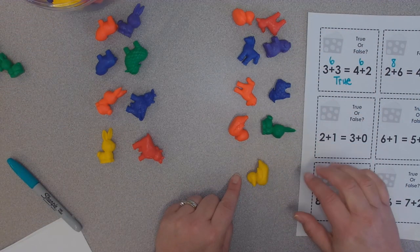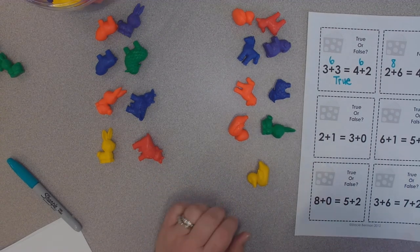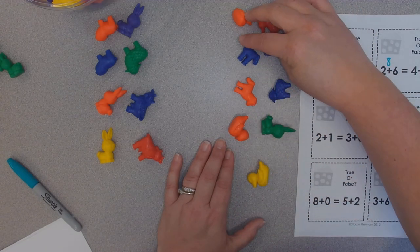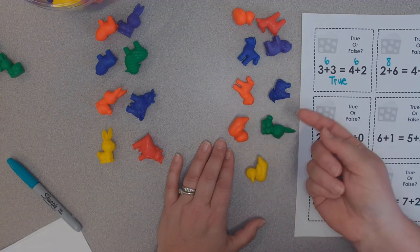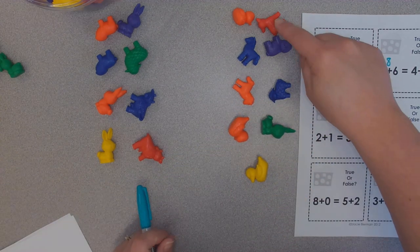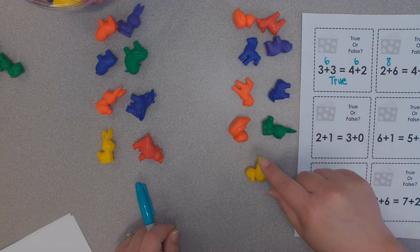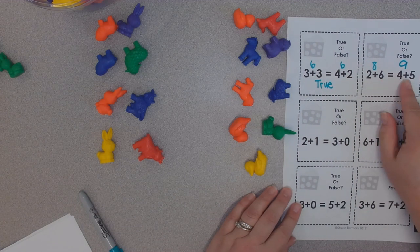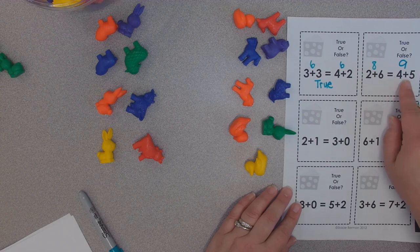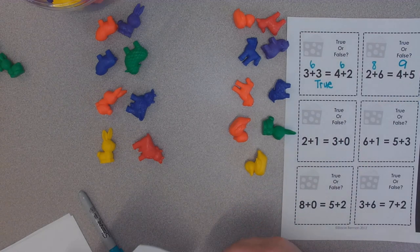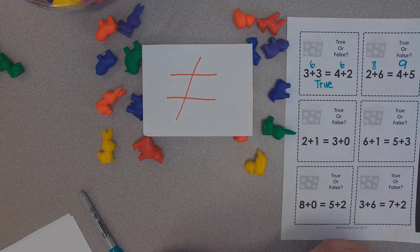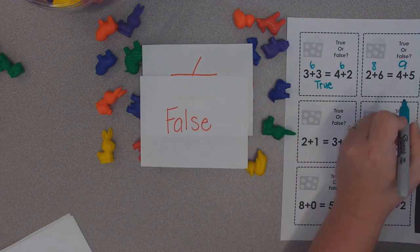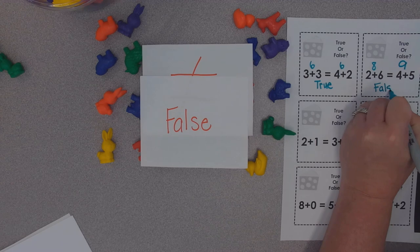It is not equal but let's see how many there are on this side just so we know. Now I know that 5 and 5 makes 10 but I have 4 and 5. So I am going to think 1 less than 10 which is 9, 1, 2, 3, 4, 5, 6, 7, 8, 9. Okay boys and girls, I have 8 and I have 9. So is this the same amount on both sides? No, it is not equal. Not equal, is that true or false? That means false. So I am going to write the word false.